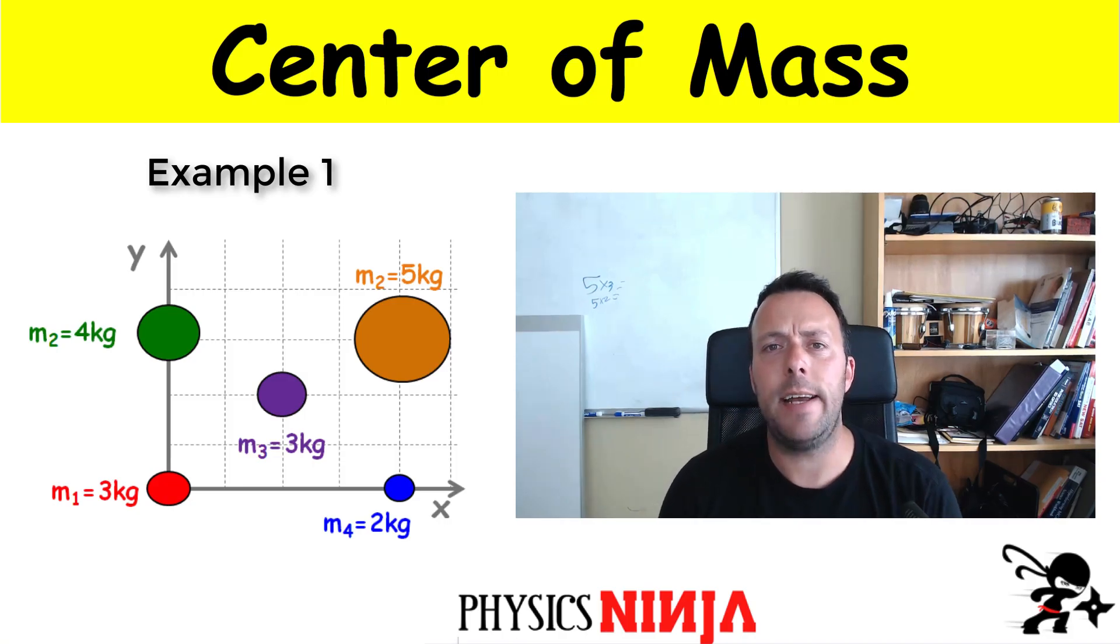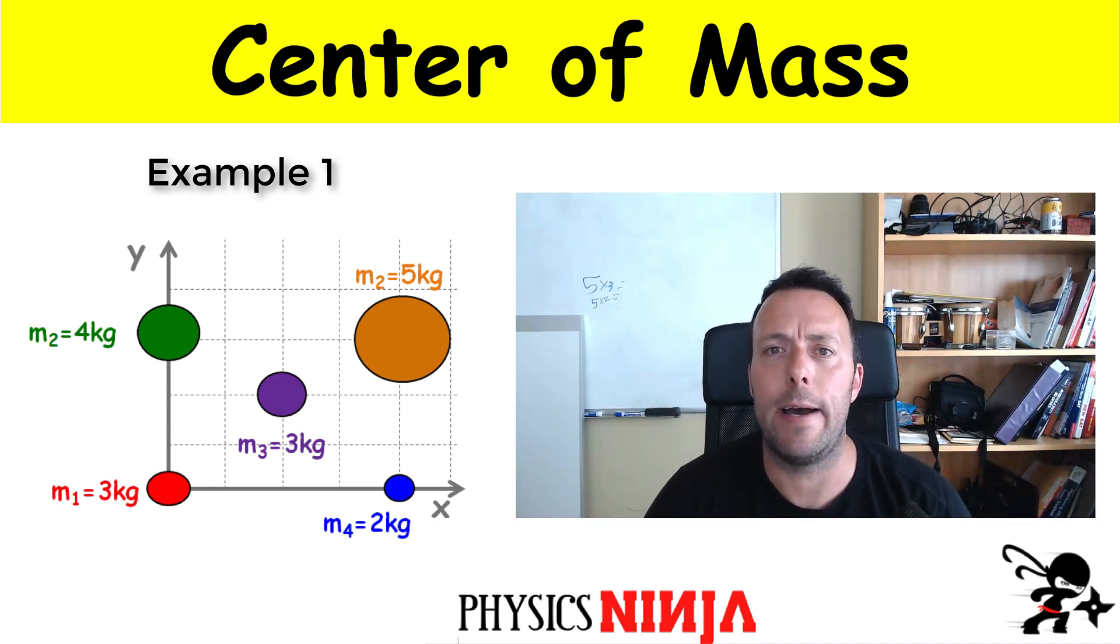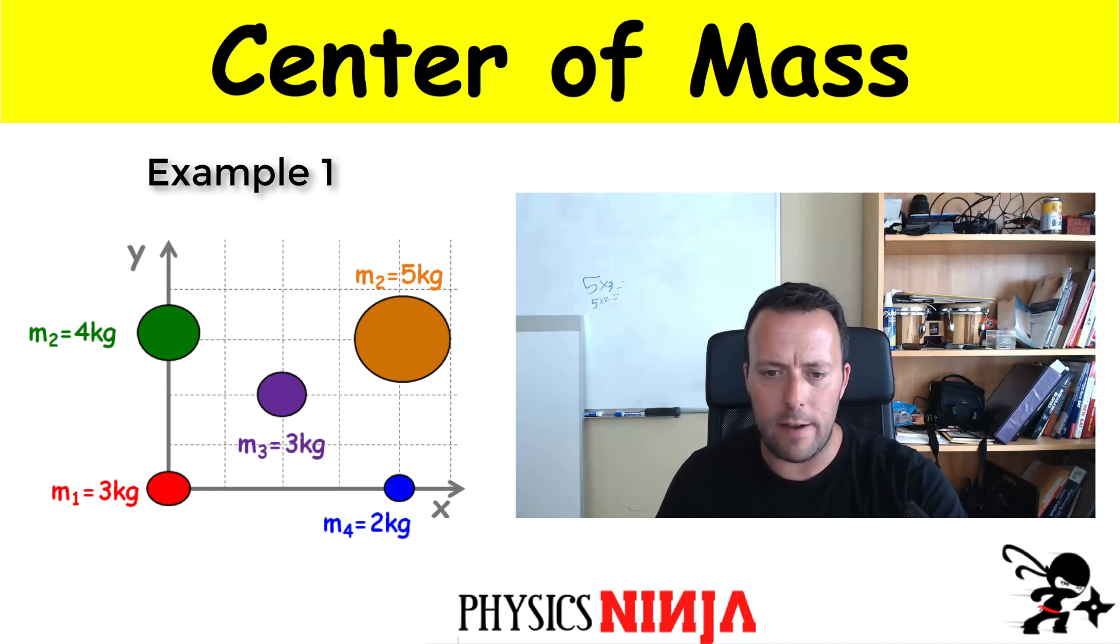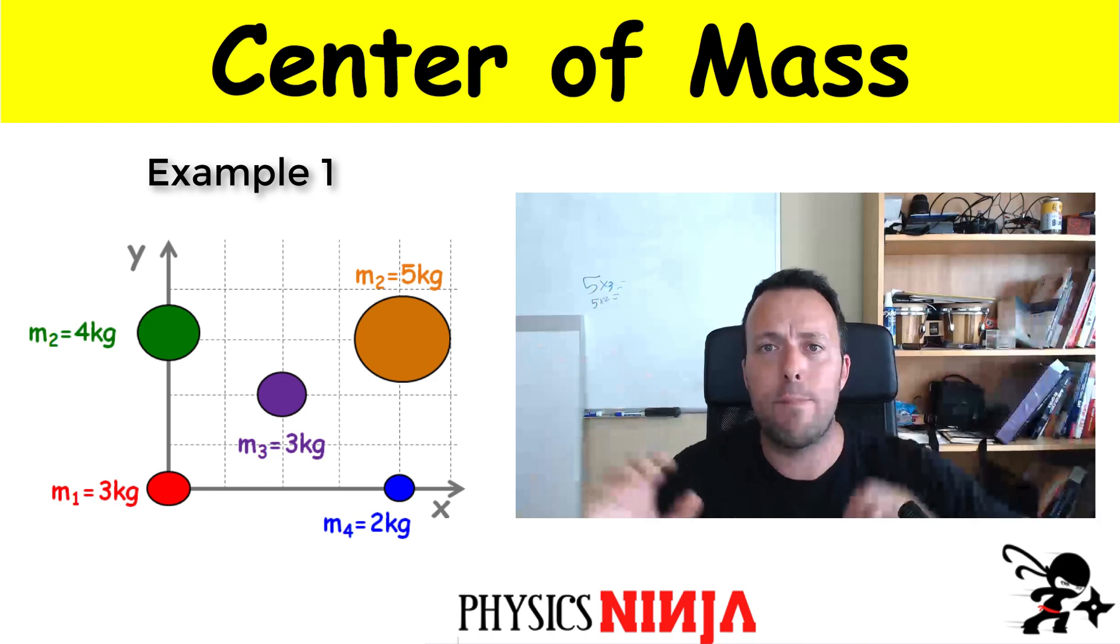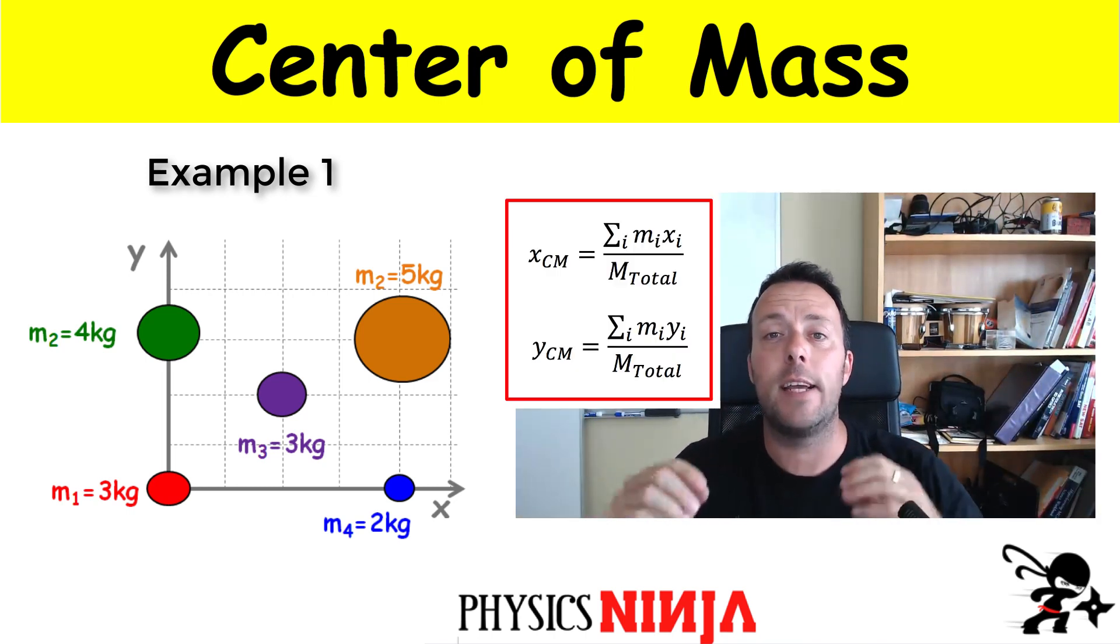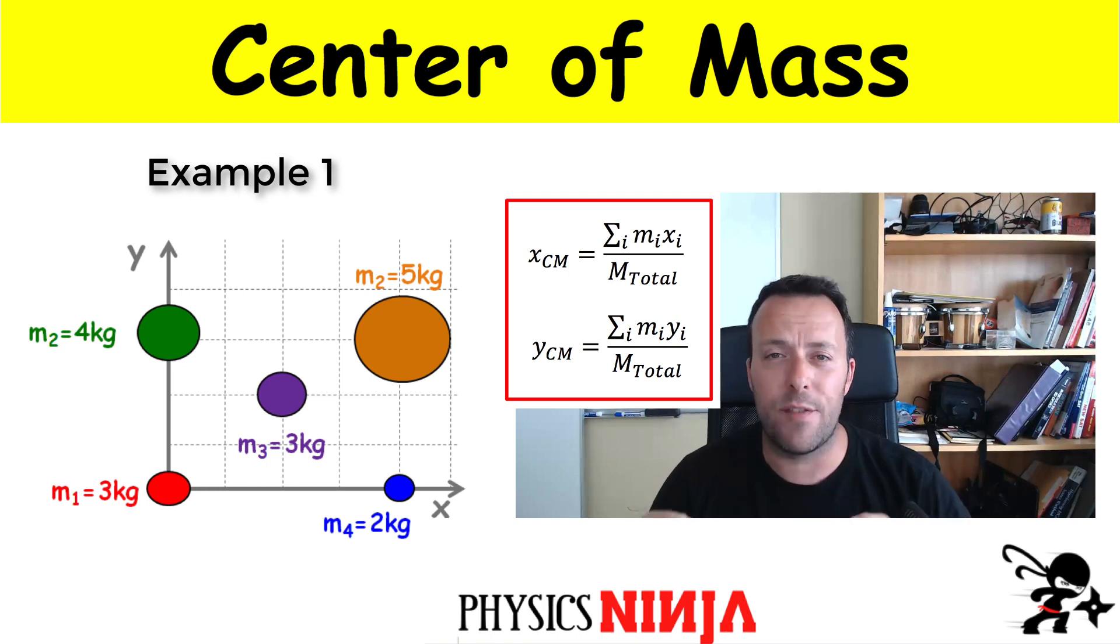Hi everybody, PhysicsNinja here. Today I have two problems that look at calculating the center of mass when I've got masses spread out on the XY plane. In this first problem, I've got five masses over here, various values located in different positions. And what I want to do is I want to apply my equations to find the coordinate of the center of mass of this system.